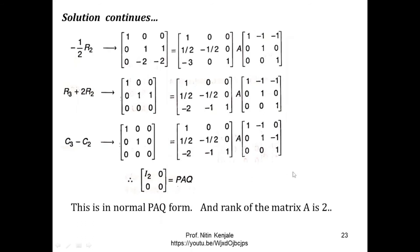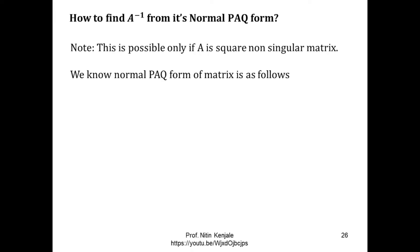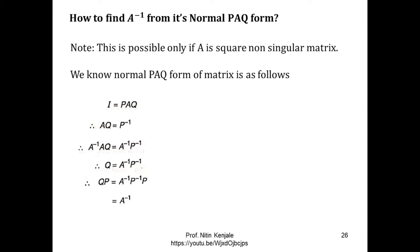From this normal form, since an identity matrix of order 2 appears, the rank of matrix A is 2. Now we will discuss how to find A inverse from the Normal PAQ form. Note that this is possible only if matrix A is a square non-singular matrix. If I equals PAQ, then pre-multiplying both sides by P inverse gives AQ equals P inverse. Pre-multiplying both sides by A inverse gives Q equals A inverse times P inverse. Finally, post-multiplying both sides by P gives QP equals A inverse.